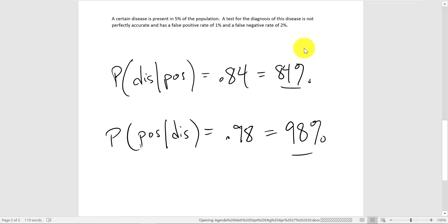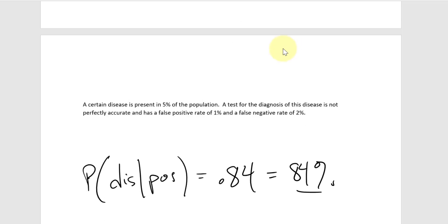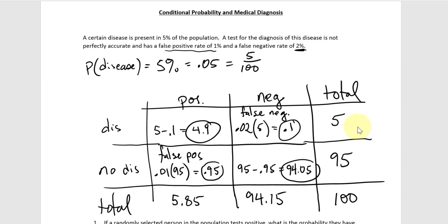I want to make this really important point. There's a critical difference between the probability you have the disease if you test positive — which I just calculated at 84% — and the probability you test positive if you have the disease. Those are different. This is 98%. If you have the disease, the chance you test positive comes right from the false negative rate of 2%. Looking back at the table: if I know 5 people have the disease, then 4.9 divided by 5 equals 98%.